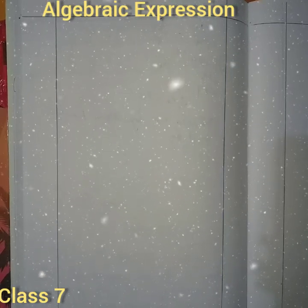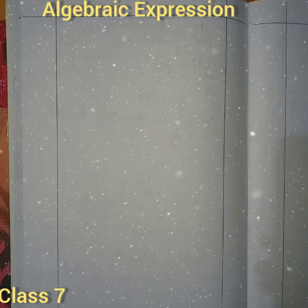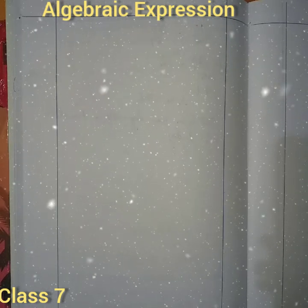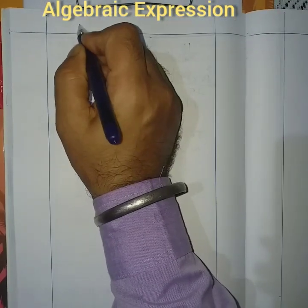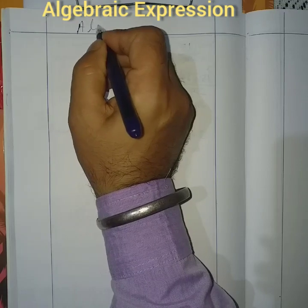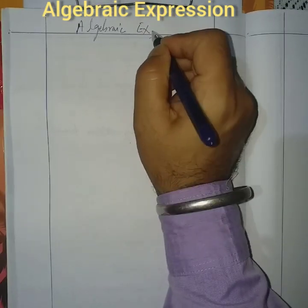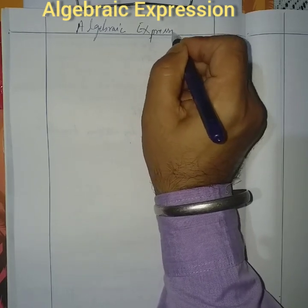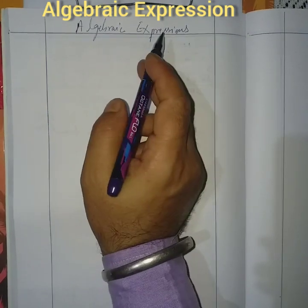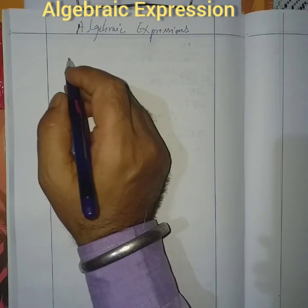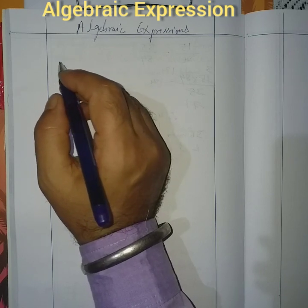Welcome to Class 7 Mathematics. Today we are doing algebraic expressions, chapter number 13. This algebraic expression is under algebra. Algebra is a branch of mathematics that uses symbols and letters to stand for numbers.